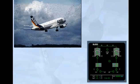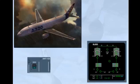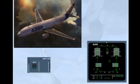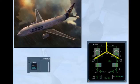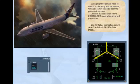During flight, you might need to switch on the wing anti-ice system, which uses hot bleed air from the pneumatic system. Observe the indication on the ECAM bleed page when wing anti-ice is used. For further information, refer to the ice and rain protection chapter.